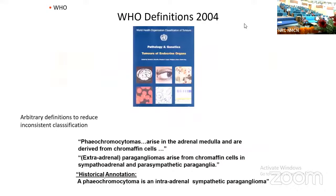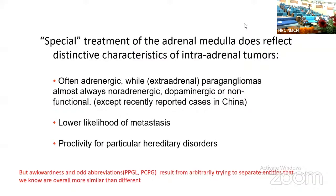The World Health Organization Blue Book in 2004 first codified some arbitrary definitions to reduce inconsistent classifications of tumors in and outside of the adrenal medulla. The 2004 Blue Book stipulated that pheochromocytomas arise in the adrenal medulla and are derived from chromaffin cells, while extra-adrenal paragangliomas arise from chromaffin cells in sympathoadrenal and parasympathetic paraganglia. As a historical annotation, it added that a pheochromocytoma is an intra-adrenal sympathetic paraganglioma. Although the nomenclature was arbitrary, the special treatment of the adrenal medulla does reflect some distinctive characteristics of intra-adrenal tumors.